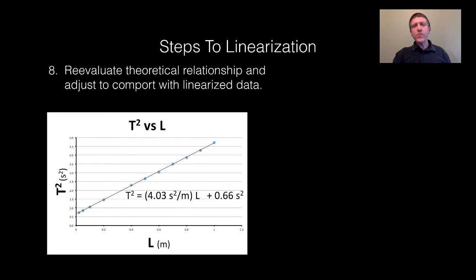Next, we're going to re-evaluate to see what the deal is with this intercept. We got to re-evaluate this theoretical relationship and adjust it to comport with the linearized data. Now, according to my original theoretical relationship, T² equals 4π²/g times L. That should be direct. That should go through the origin.